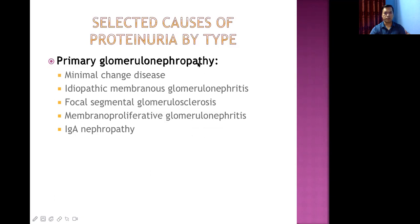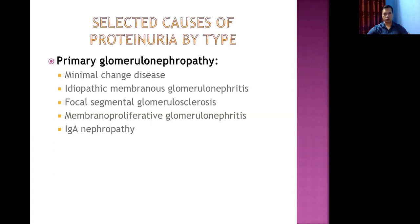Primary glomerulonephropathies causing proteinuria include: minimal change disease (MCD) — the commonest cause of nephrotic syndrome in children, showing no changes on light microscopy but loss of podocytes on electron microscopy; idiopathic membranous glomerulonephropathy — most important cause of nephrotic syndrome in adults; focal segmental glomerulosclerosis (FSGS) — an important cause and the most common cause of steroid-resistant nephrotic syndrome; and IgA nephropathy.